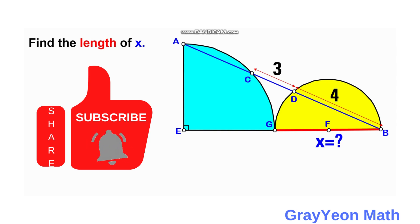Welcome to GrayonMath. We are asked to solve this problem. We have a quarter circle and a semicircle, a yellow semicircle, and a line is drawn from the top of this quarter circle down to the bottom right part of this semicircle. The distance from C to D is 3 units and from D to B is given to be 4 units.